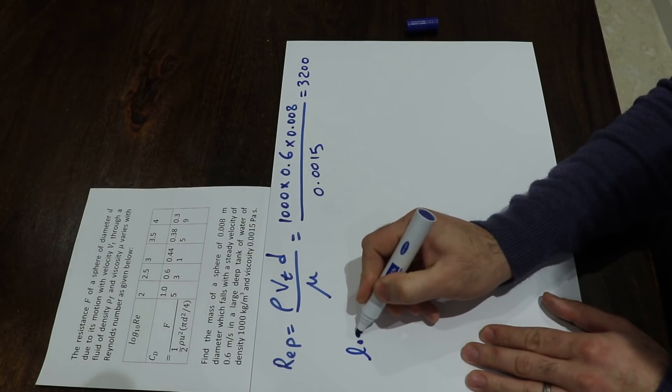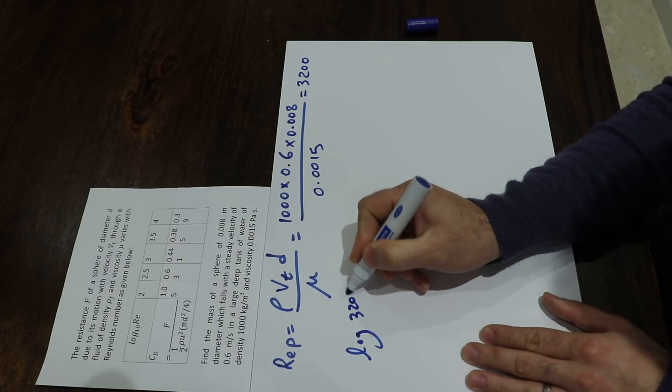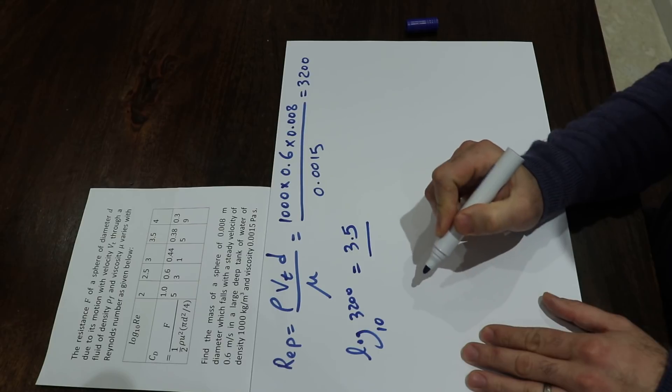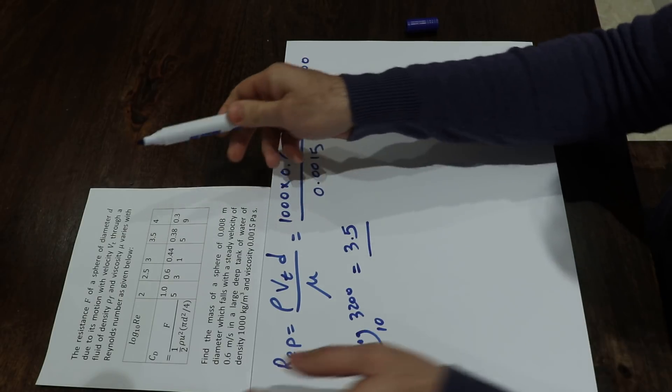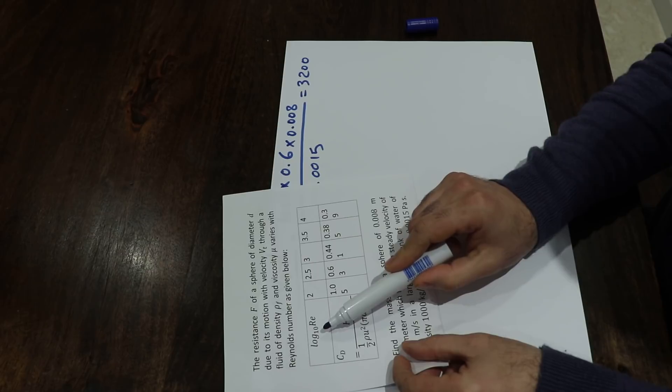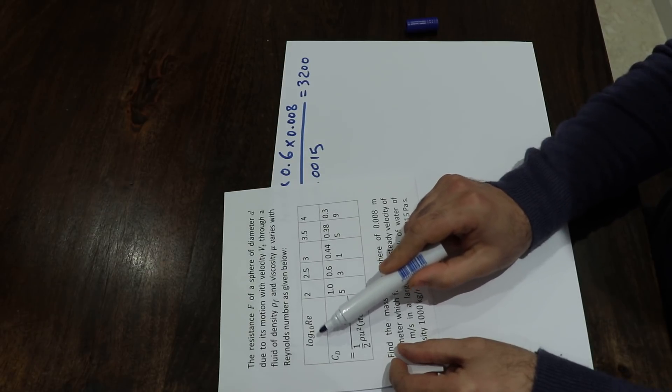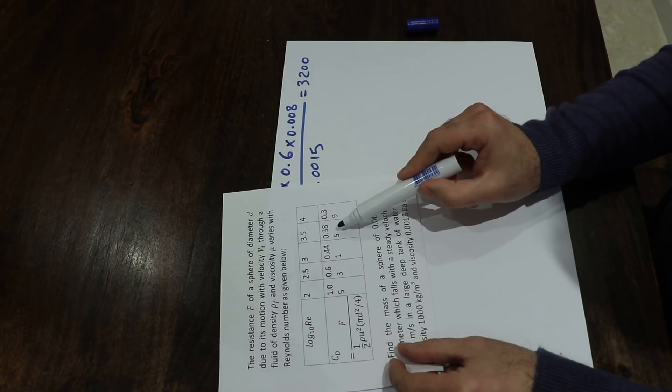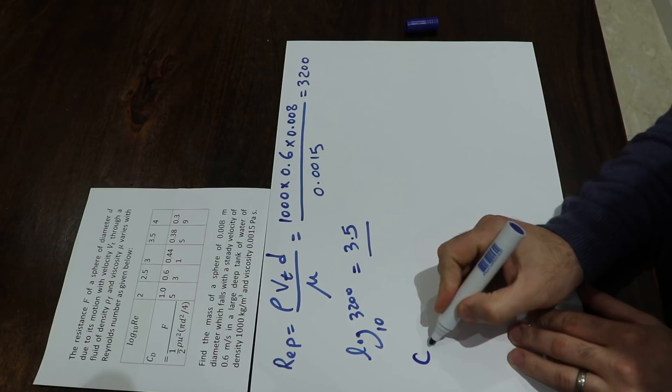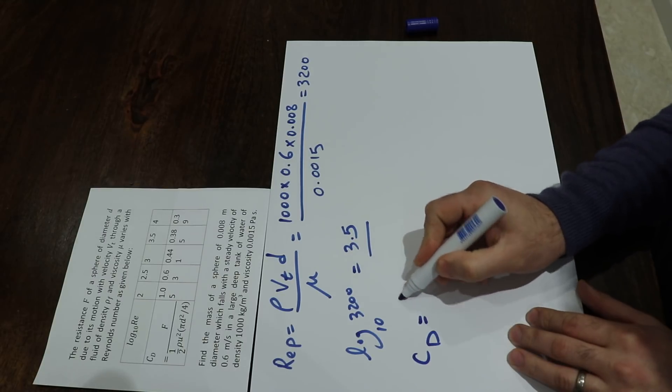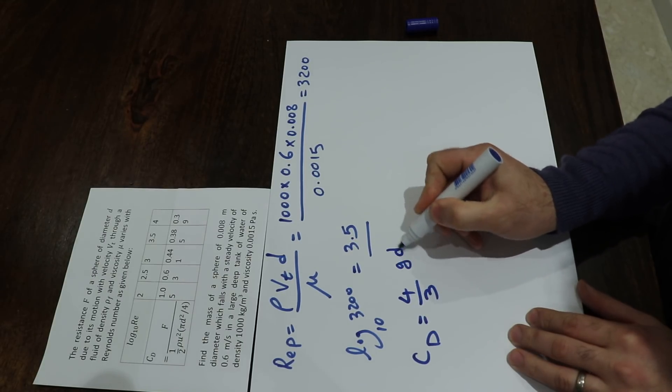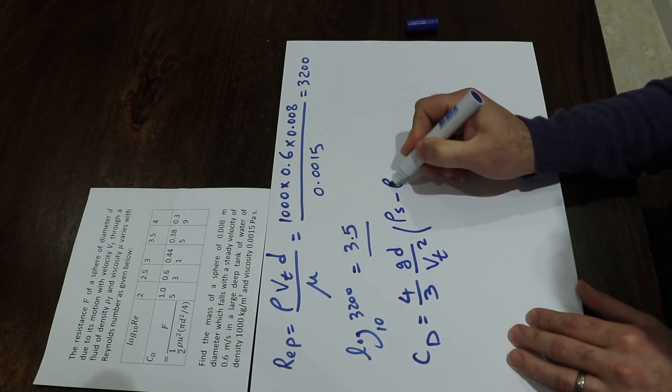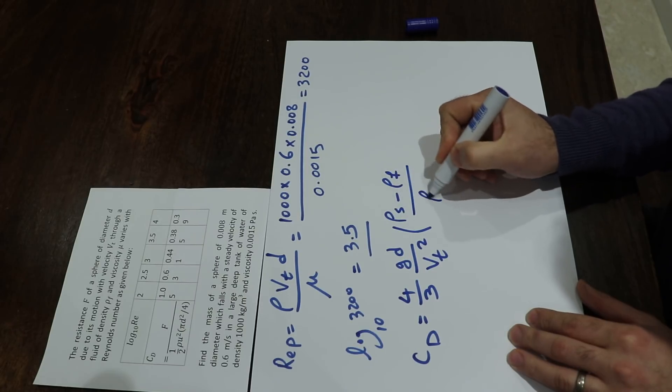We know that log 3,200 equals 3.5. When you look at this table for log Reynolds number 3.5, you have the value of cd, the drag coefficient. We know that cd equals 4 divided by vt² times (ρs - ρf) divided by ρf.